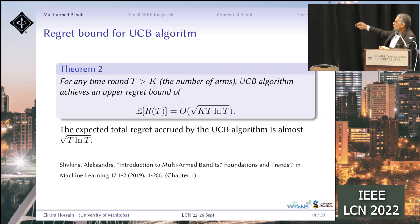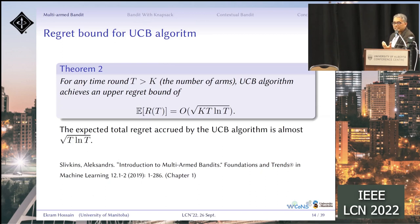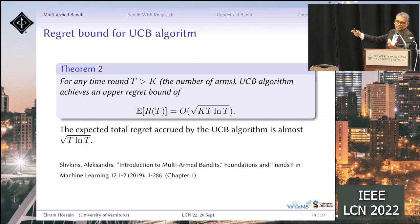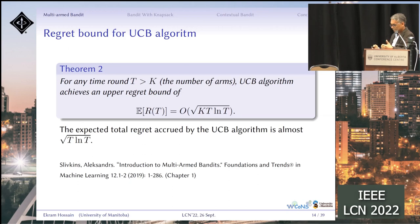The expected regret for UCB can be bounded and is sublinear. As you increase the number of stages, the regret will go down. The expected regret grows sublinearly with the number of stages.